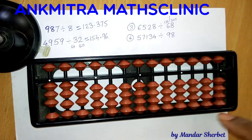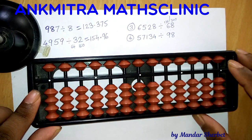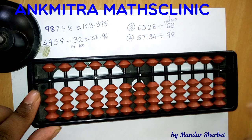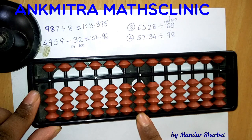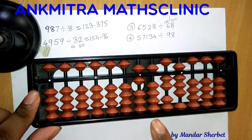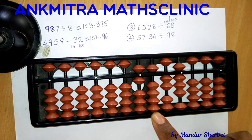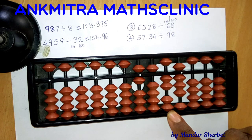We'll start with the dividend, which is 6528, placed starting from the thousands place. We start with the first two-digit number on the question set, which is 65. Since 65 is smaller than the divisor 68, we cannot do anything on this rod, so we move to the next rod — the tens place rod. Now we have the number 652 in front of us.